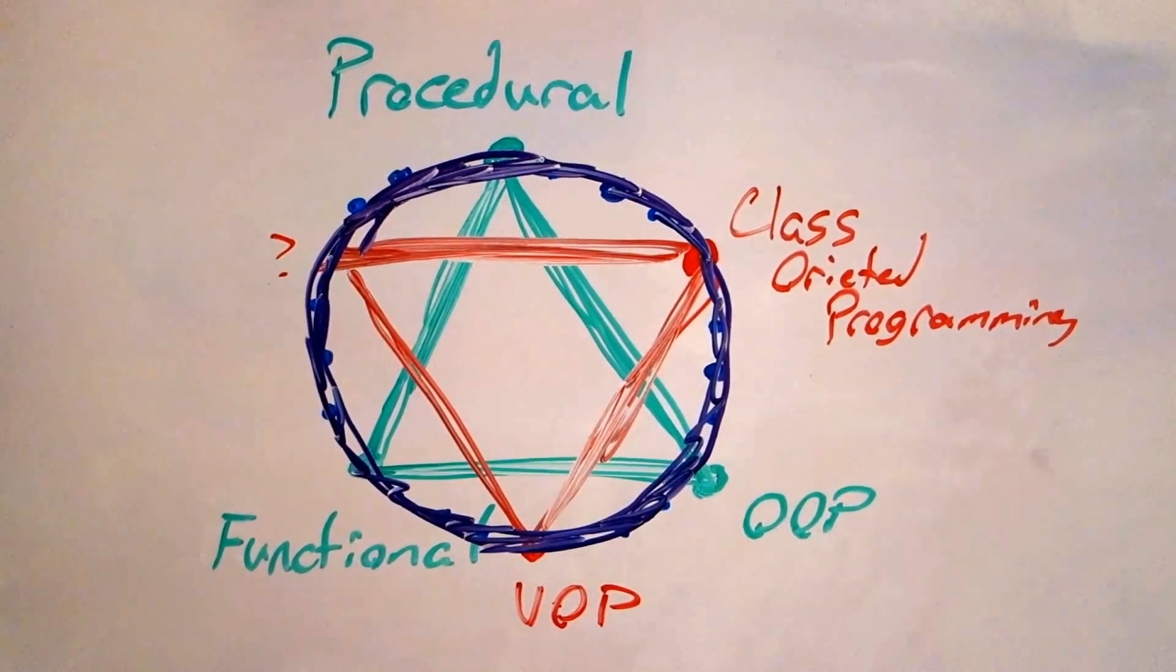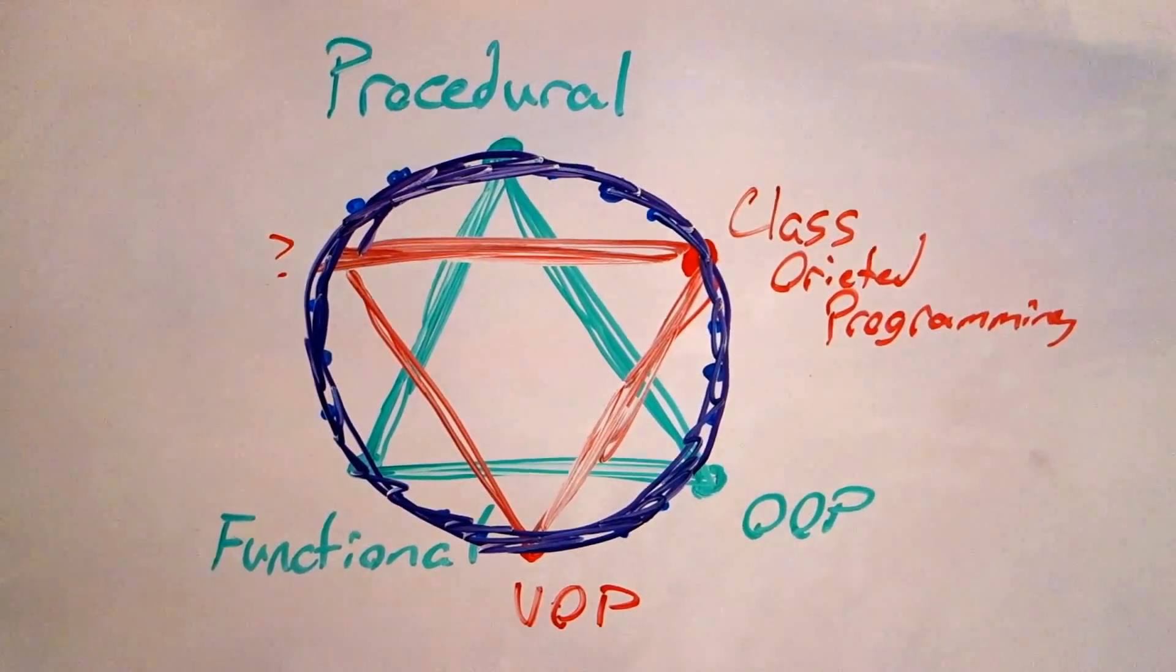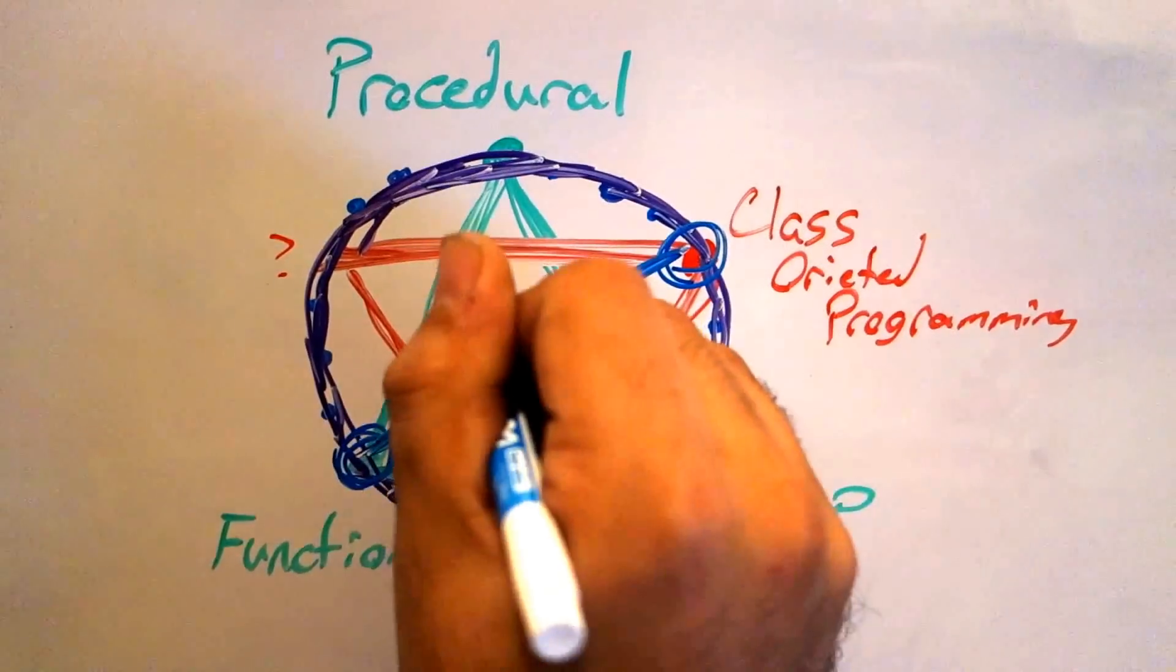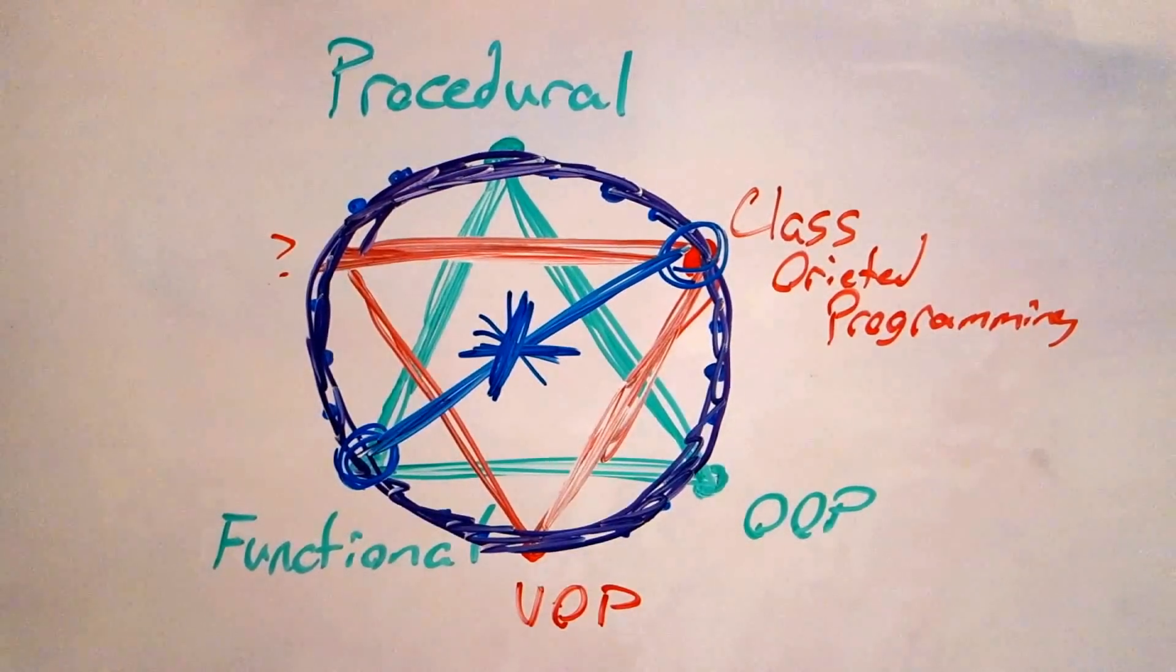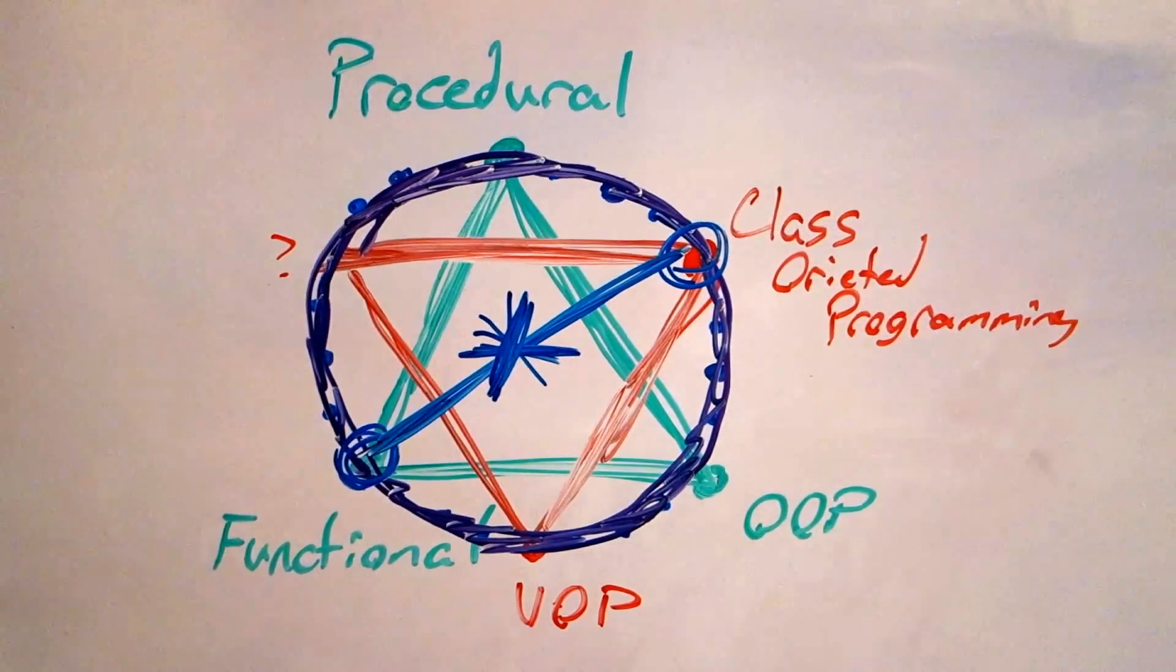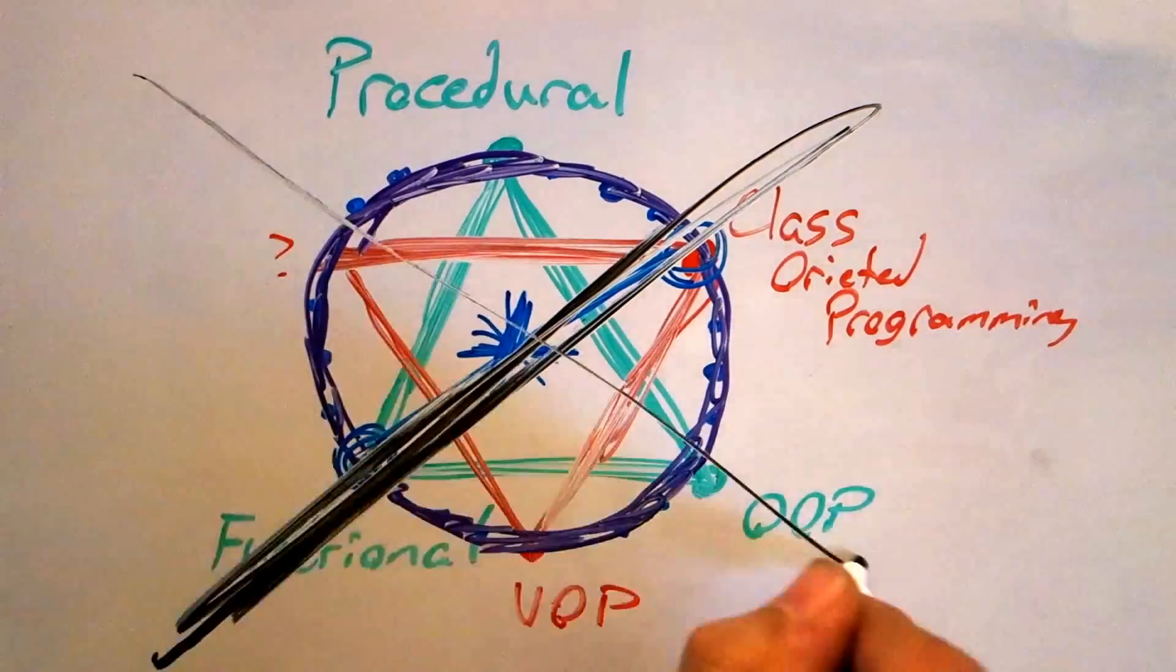But is it really a circle? Well, if it was, class oriented programming would be the literal opposite of functional programming. It's not, so we can't really have a true circle.